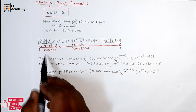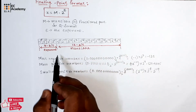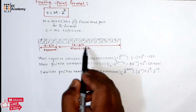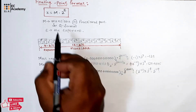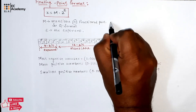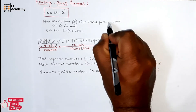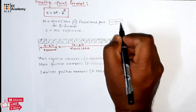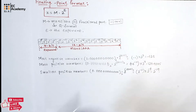This is the floating point format representation where we have 4 bits for the exponent and 12 bits for the mantissa. The mantissa has the limit between minus 1 to plus 1, which means the mantissa should have a value between minus 1 to plus 1.